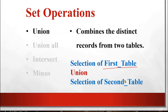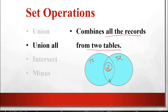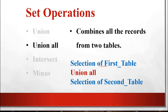The number of columns, types of columns, and order of columns from the first and second table must be the same. The next operation is UNION ALL — it combines all records from two tables, including common records appearing two times. So the difference between UNION and UNION ALL is: in UNION, common records appear only once, but with UNION ALL, all common records appear two times. The syntax is the same as UNION but with the keyword UNION ALL.